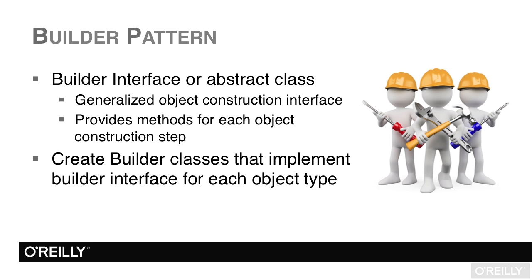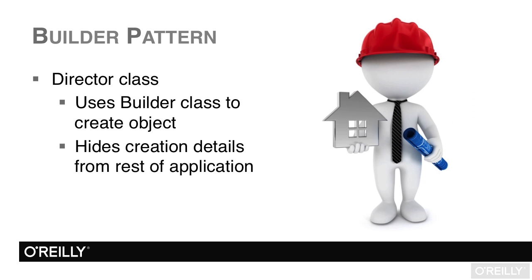The builder pattern helps us with this. It creates a builder interface or abstract class — a generalized object construction interface — with methods for each construction step. For a database, that means methods to create the connection string, the connection object, and the command object. We then create builder classes that implement the builder interface for each object type. A director class uses the builder class to create the object and presents it to the application code, hiding all those messy creation details.